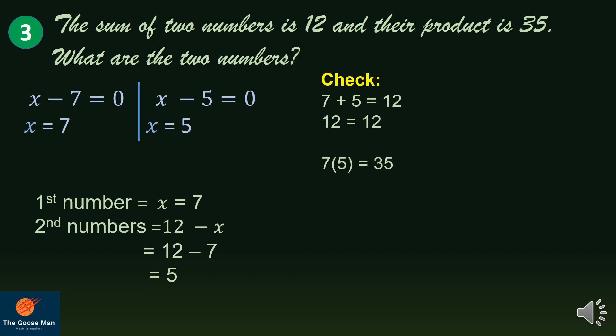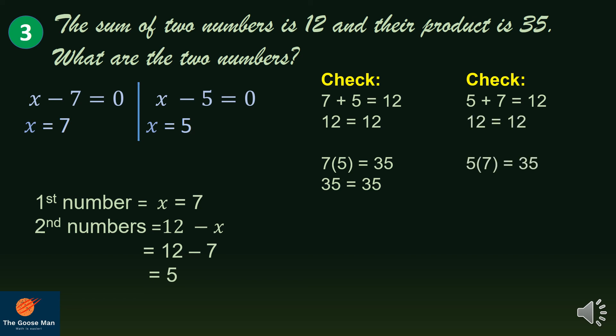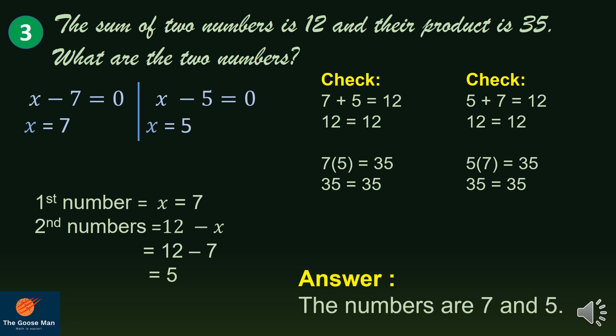Also, 7 times 5 — is it equal to 35? Yes, 35 equals 35. On the other hand, if we use 5 as the first number and 7 as the second, 5 plus 7 equals 12 and 5 times 7 equals 35. Both check out. So our answer — the two numbers are 7 and 5.